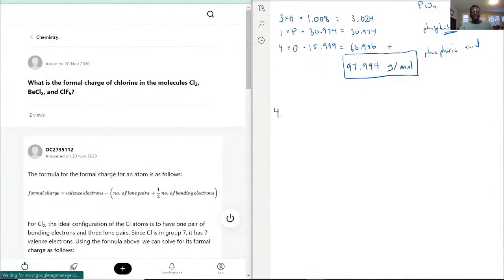What is the formal charge of chlorine in the molecules Cl2, BeCl2, and ClF5? The key part here is that they are asking for formal charge and not oxidation number.